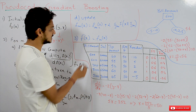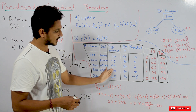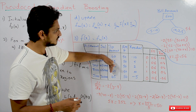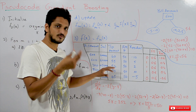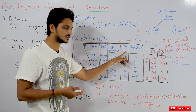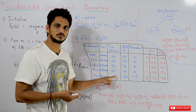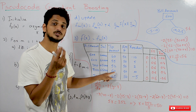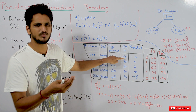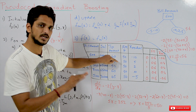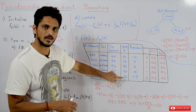The example dataset we consider here has bill amount and salary as inputs and tip amount as the output — the predicted value. In gradient boosting, our first model's prediction is the mean of all tip amount values. The mean value we got is approximately 50, so our first model prediction is 50 for all data points.